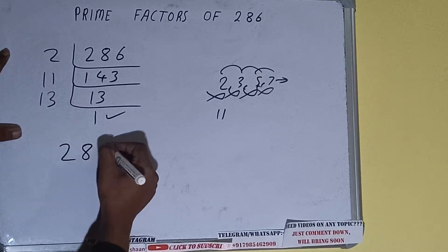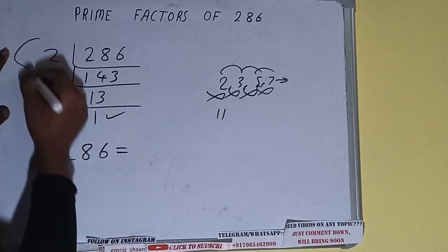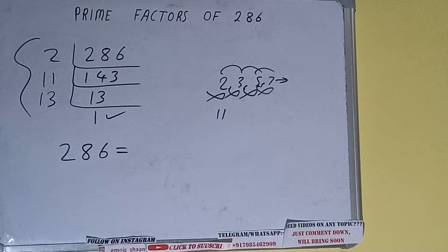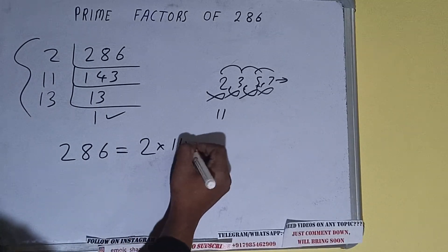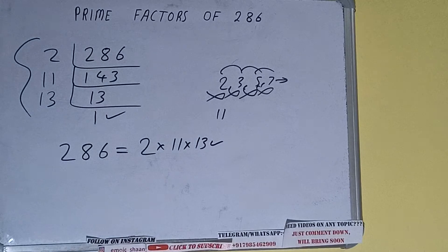one last thing, that is prime factors of 286 equals to multiply whatever we have on the left-hand side, that is 2 × 11 × 13. That will be the answer. So this is all about prime factors